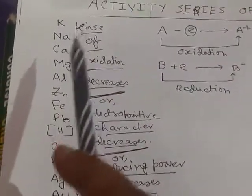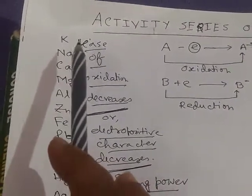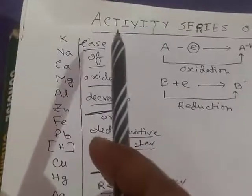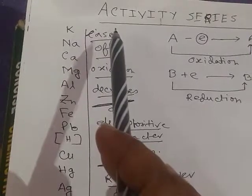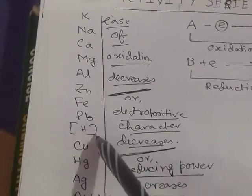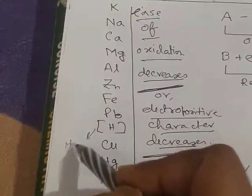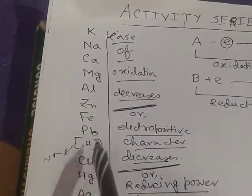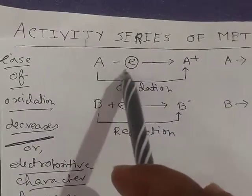This series is formed according to the positive ion formation capability of the metal ions — that is, how easily metals can form their positive ions. Hydrogen, though a non-metal, can form a positive ion H⁺, similar to other metals. So hydrogen is placed in this series and is taken as the standard.